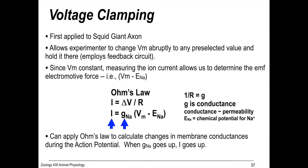Hodgkin and Huxley used voltage clamping to hold the membrane potential constant so that they could measure changes in membrane conductance during the action potential. Voltage clamping allows the experimenter to change membrane potential abruptly to any value they choose and hold it there using a feedback circuit.